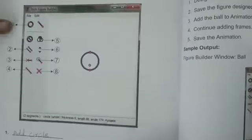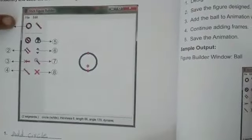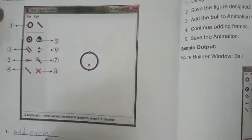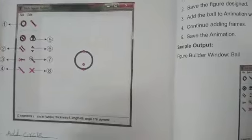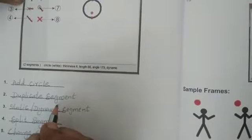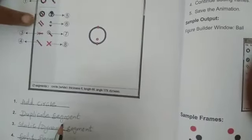Now here first one, you can see a circle. The circle is known as add circle. Second one, what is this tool known as? Delay or duplicate segment. What is this tool known as? Duplicate segment.